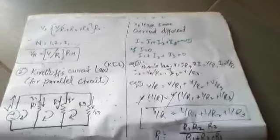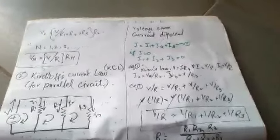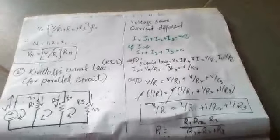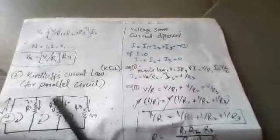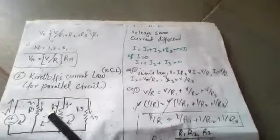Therefore, just as you have seen the voltage divider formula, in the same way you can see the current divider. We use the current divider to find individual branch currents. When we have a parallel circuit, we write our equation for the current divider.